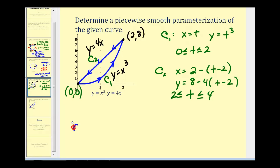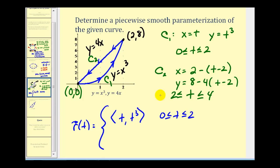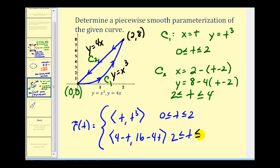Writing this as a vector-valued function: for curve one, we have (t, t cubed) for t on [0, 2]. For curve two, simplifying two minus (t minus two) gives four minus t, and simplifying eight minus four times (t minus two) gives sixteen minus four t. So curve two is (4 minus t, 16 minus 4t) for t on the closed interval from two to four. Some of these formulas can be a little tricky — we need to manipulate expressions for t to get the values that make these formulas work.